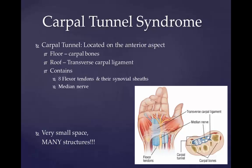Symptoms may occur in the thumb, index finger, middle finger, or the thumb side of the ring finger. Weak grip strength may occur, and after a long period of time, the muscles at the base of the thumb may waste away. In more than half of cases, both hands are affected. About 5% of the people in the United States have carpal tunnel syndrome. It usually begins in adulthood, and women are more commonly affected than men. Up to 33% of people may improve without specific treatment over approximately a year.